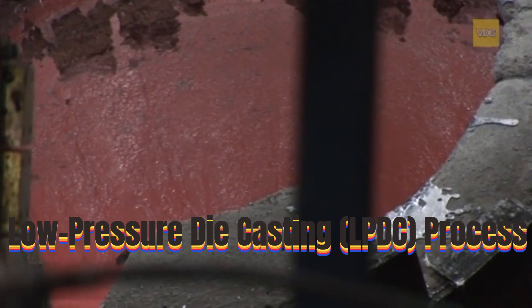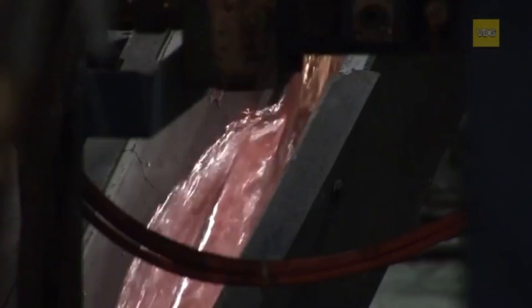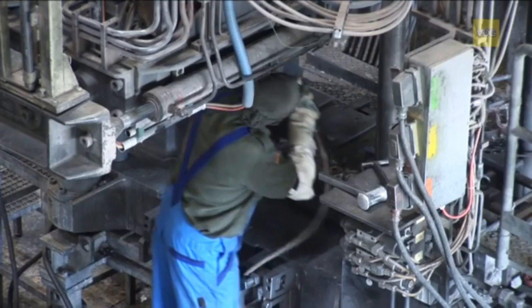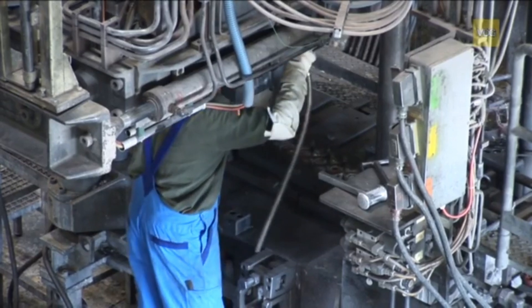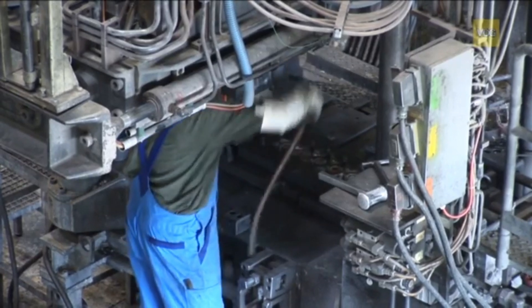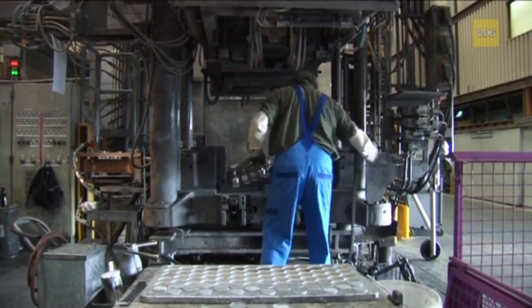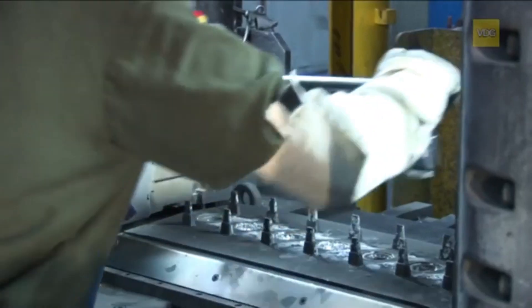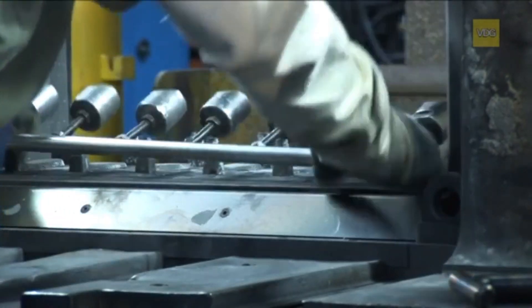In the low-pressure die casting process, molten metal is transported against gravity, from bottom to top, into the mold. At the beginning of the process, the open low-pressure mold is cleaned and, if necessary, reconditioned. Filters are placed into the gating openings in the base plate to remove impurities from the molten metal, ensuring a cleaner and higher-quality final casting.